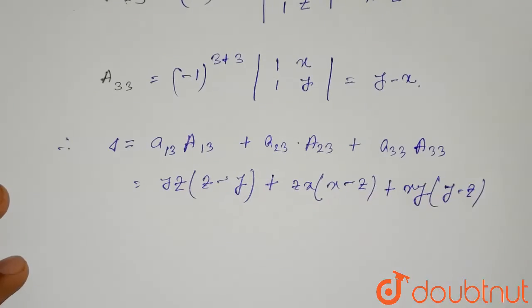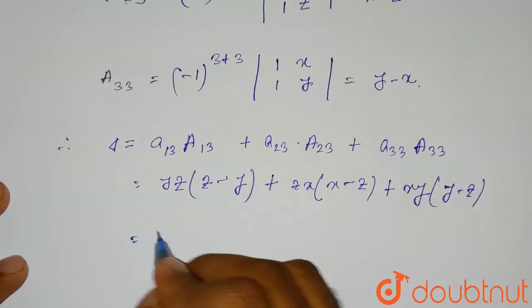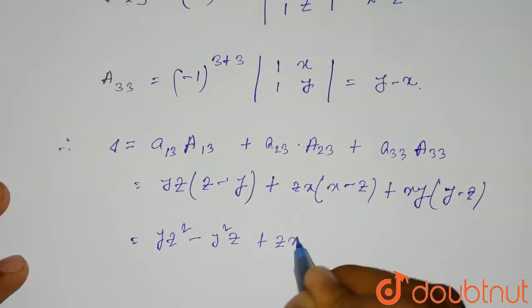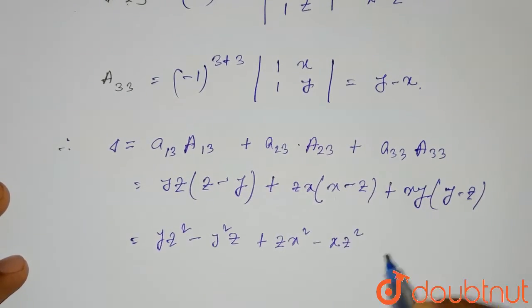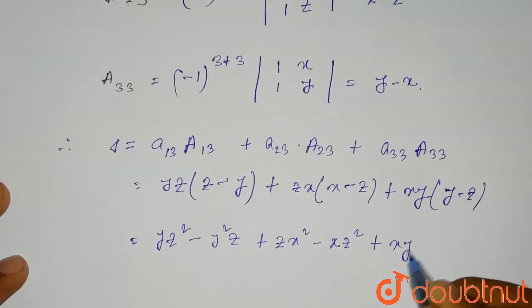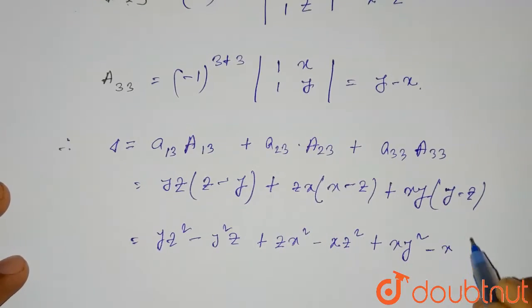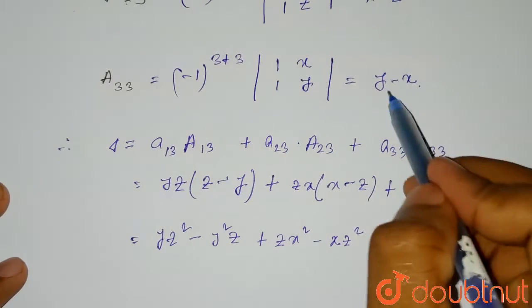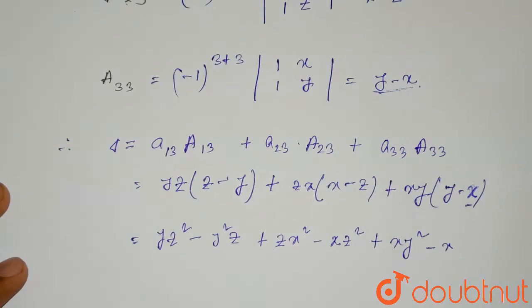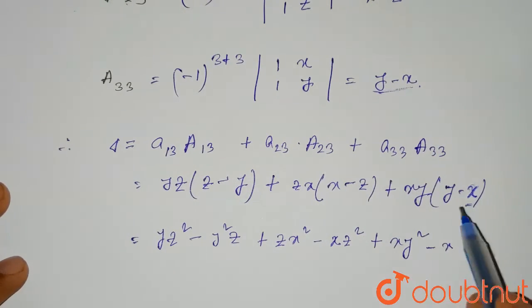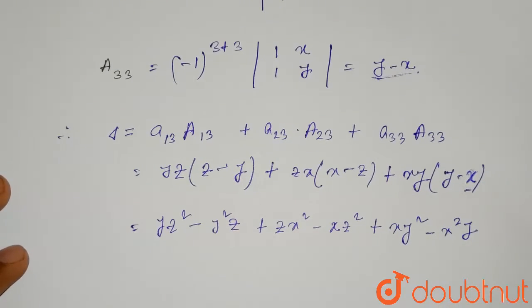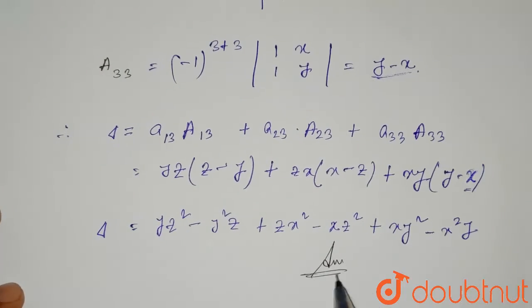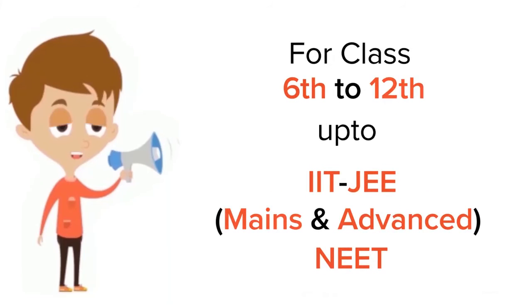Simplifying: yz squared minus y squared z, plus zx squared minus xz squared, plus xy squared minus x squared y. So delta equals yz squared minus y squared z plus zx squared minus xz squared plus xy squared minus x squared y. This is the required solution for this question.